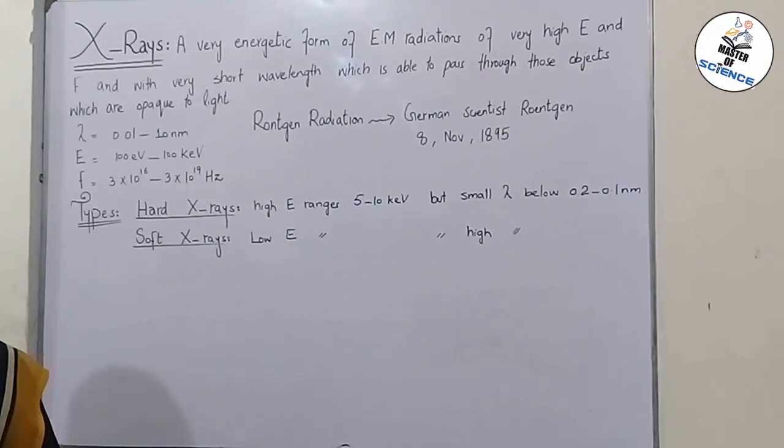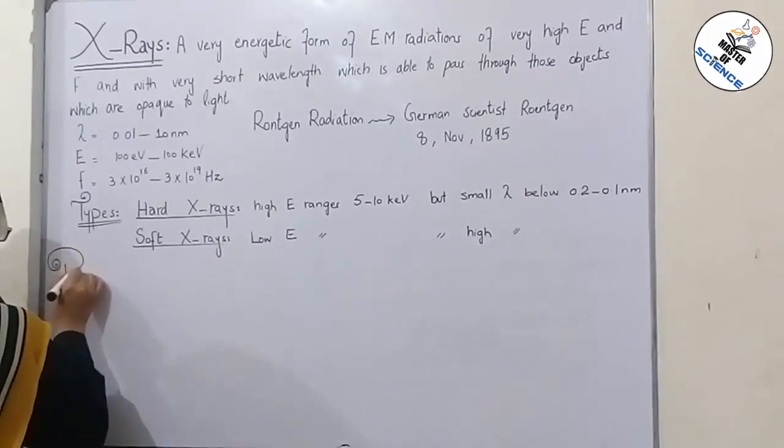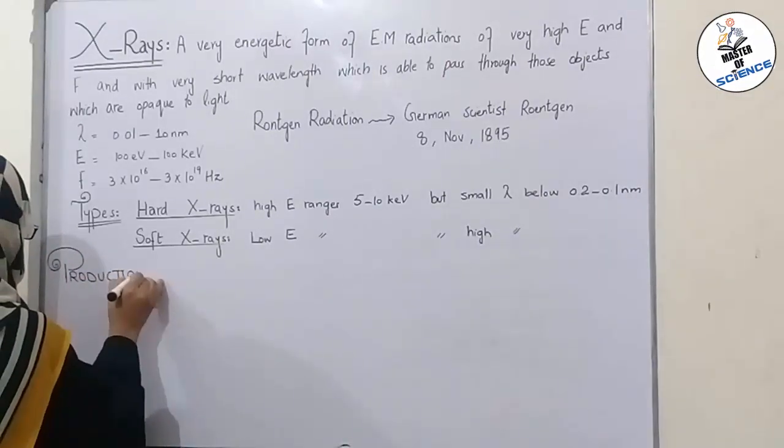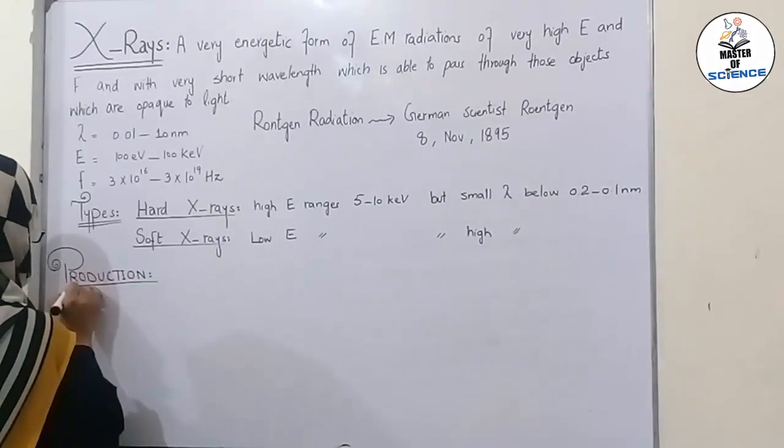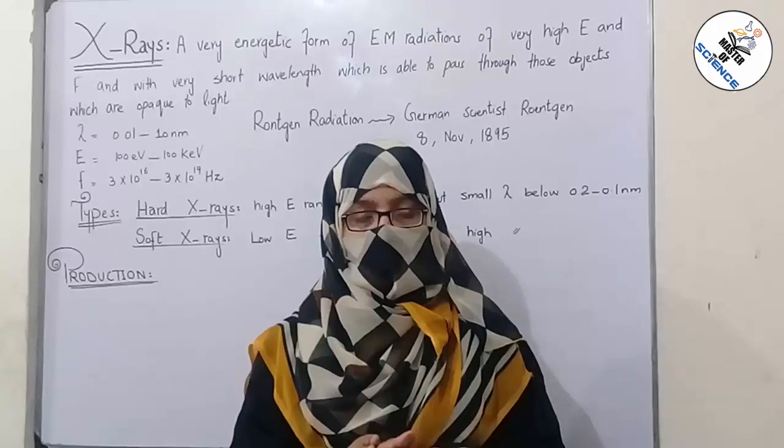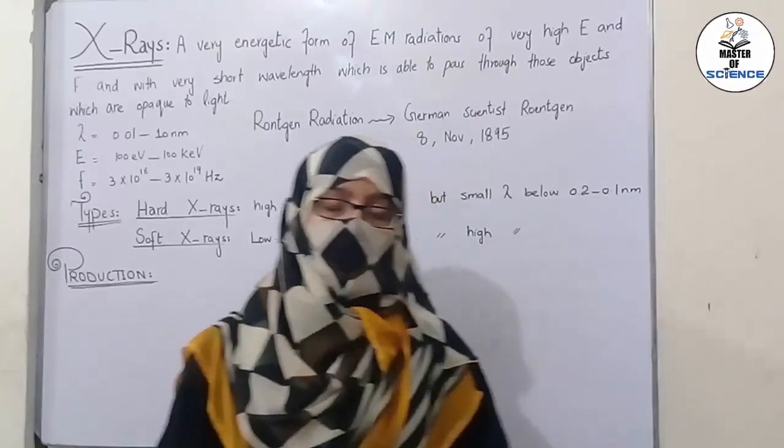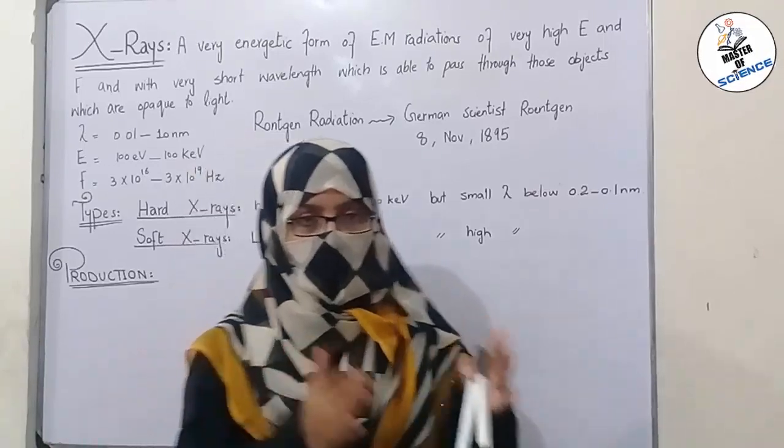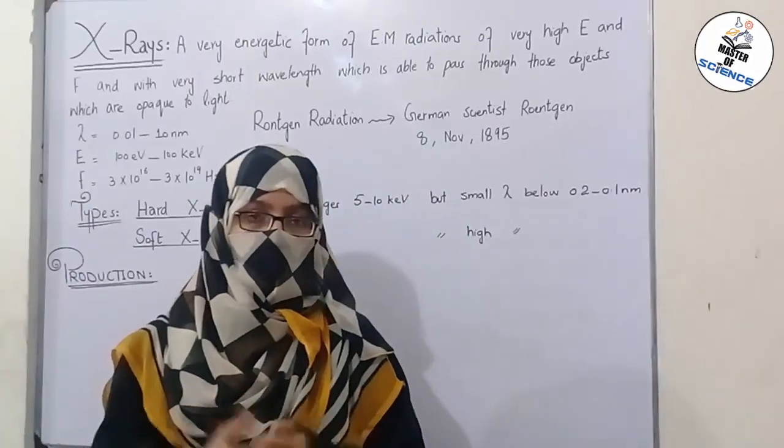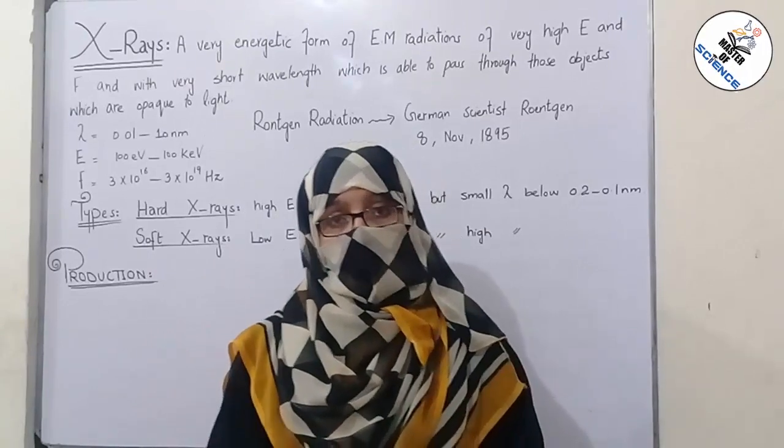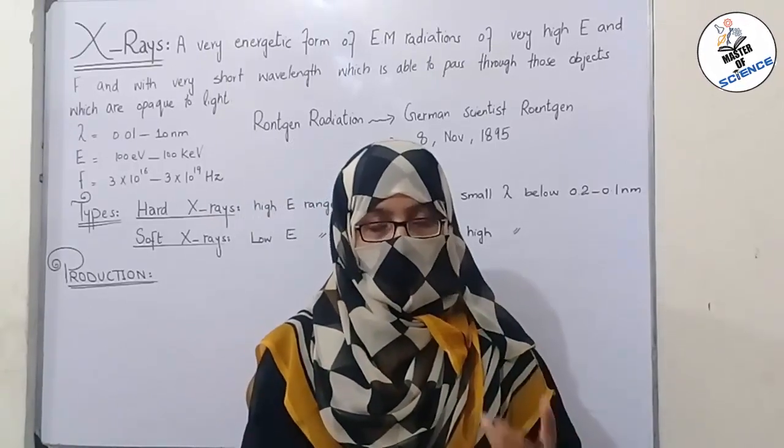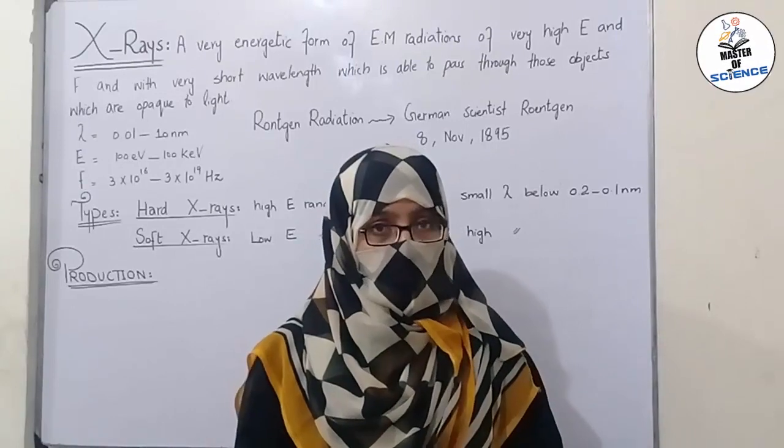Now we will discuss about its production. How X-rays are produced? For this purpose, consider a vacuum tube. X-rays are basically produced in X-ray tube and this tube is a vacuum tube which has two sides: a cathode side and anode side. It uses high voltage to accelerate electrons emitted by the hot cathode. Hot cathode is actually a metal filament that is heated.